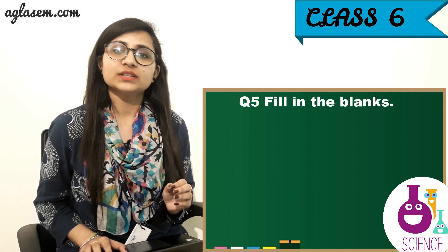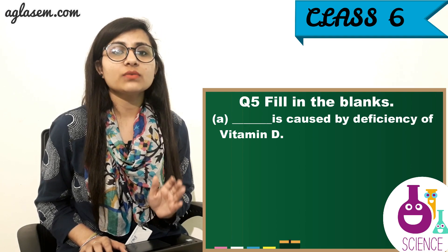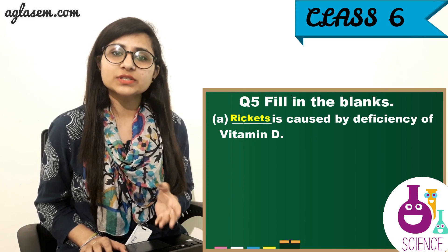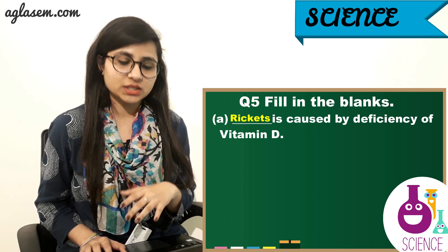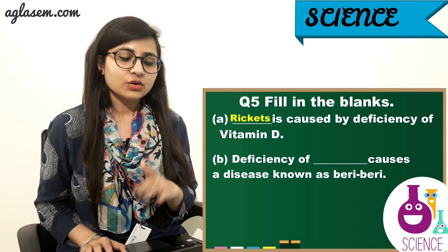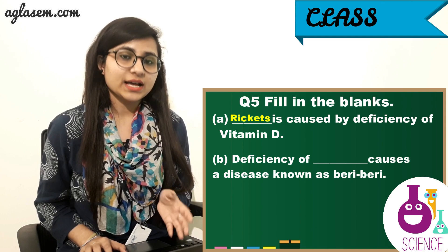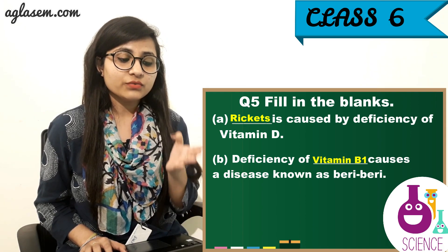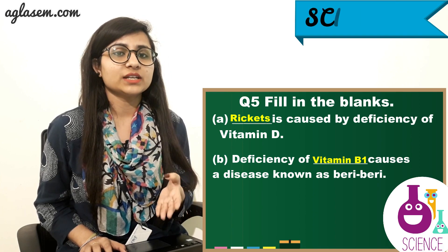Question number 5: Fill in the blanks. A) Rickets is caused by deficiency of Vitamin D. B) Deficiency of Vitamin B1 causes a disease known as beriberi.